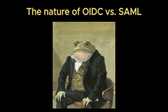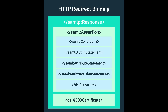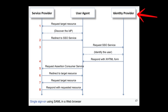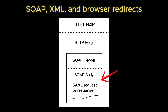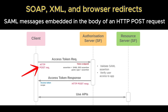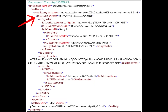Let's talk about the nature of each standard. SAML, or Security Assertion Markup Language, is an XML-based framework. It describes how identity and security information — called Assertions — can be exchanged between a trusted identity provider and a service provider. It was built in an era dominated by SOAP, XML, and browser redirects, which is why it relies on verbose XML documents and HTTP POST bindings. Its design emphasizes interoperability between large enterprise-scale systems and strong guarantees of authenticity and integrity via digital signatures embedded in XML.